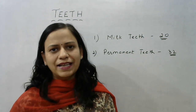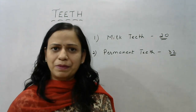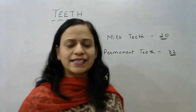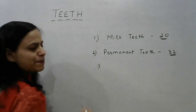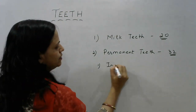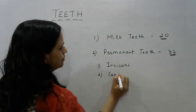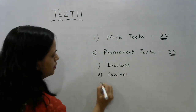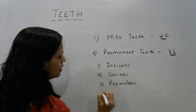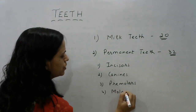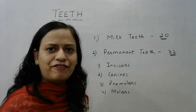The permanent teeth are meant to last for the rest of our lives. Generally by the time a child attains 12 to 13 years of age, the milk teeth have been replaced by permanent teeth. These permanent teeth are of four different kinds: the incisors, the canines, the premolars, and the molars.